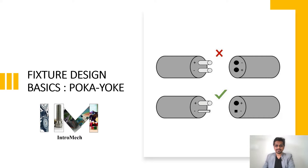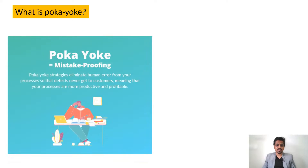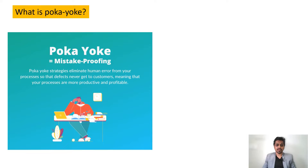Without wasting time let's get started. Now, what is Poka-yoke? Poka-yoke is nothing but mistake proofing. It is a strategy to eliminate human error from processes so that defects never reach customers, meaning your processes are most productive and profitable. That means even if we try to make a mistake, it should not happen — that is the concept of mistake proofing.